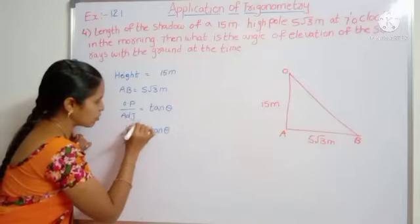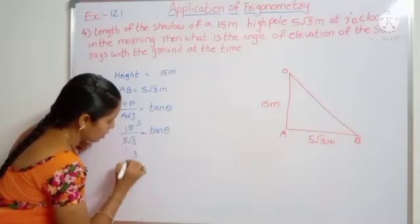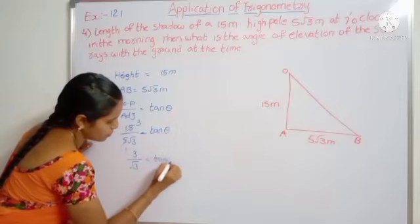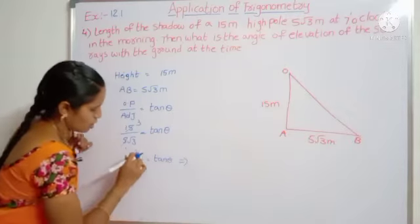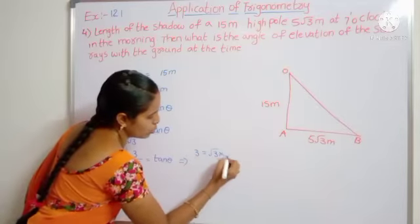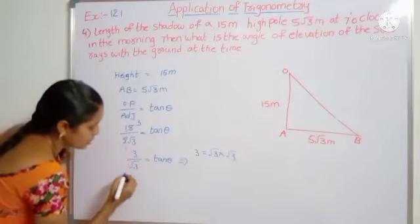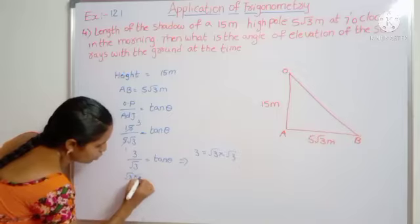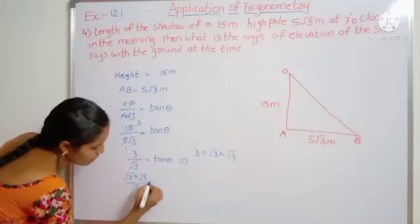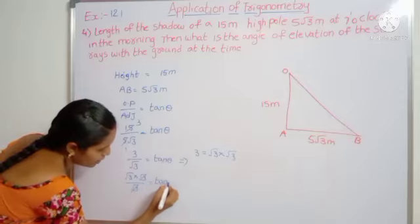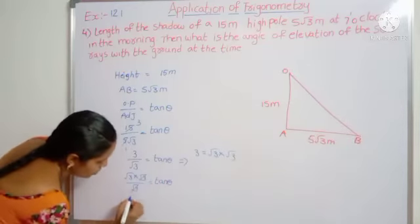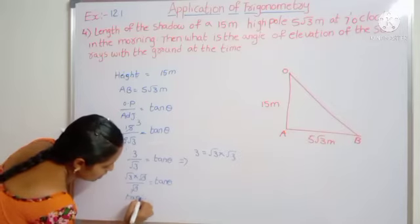Tan theta value we don't know. Here 5 ones are 5, 5 threes are 15, so 3 by root 3 equal to tan theta. 3 equals root 3 times root 3. Now substitute this one: root 3 times root 3 by root 3. Root 3, root 3 get cancelled, equal to tan theta. Root 3 means tan 60 degrees.